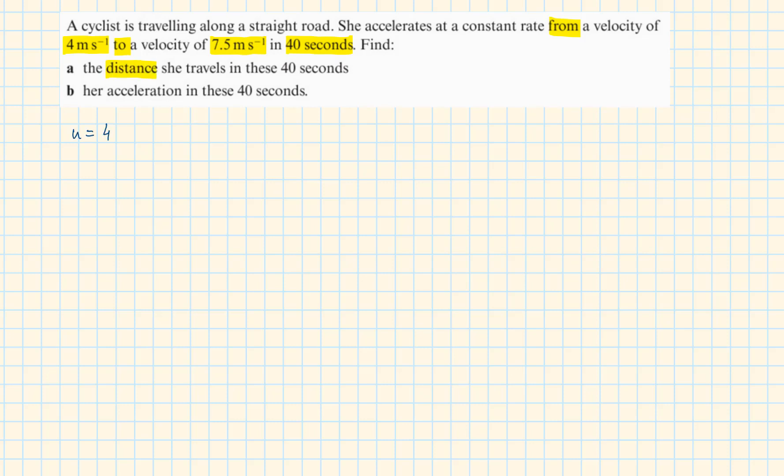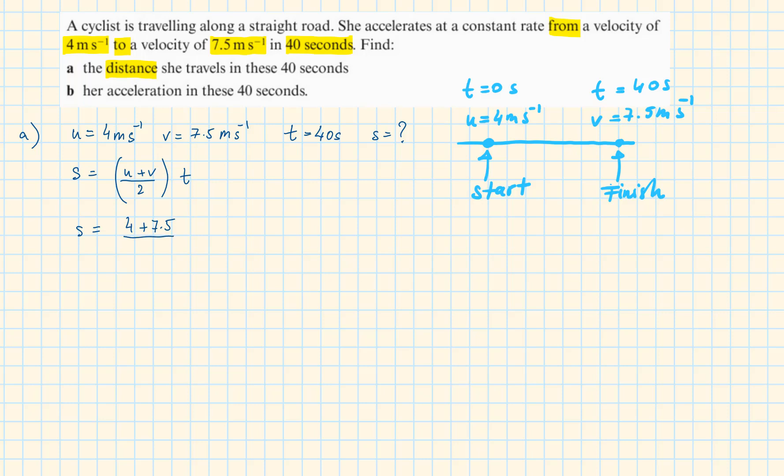We know the initial velocity U is equal to 4 meter per second, final velocity V is 7.5 meter per second, T is 40. We don't know the displacement. Using the formula for the displacement, S is equal to 4 plus 7.5 over 2 times 40 and this is equal to 230 meters. She travels 230 meters in these 40 seconds.